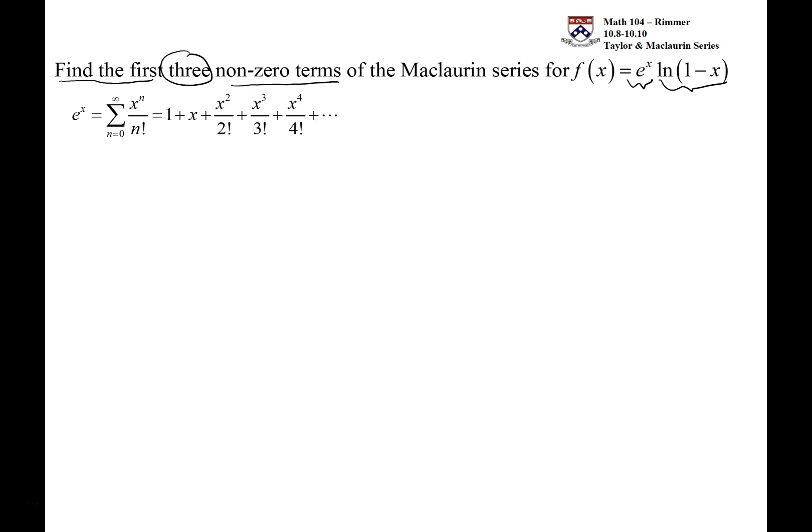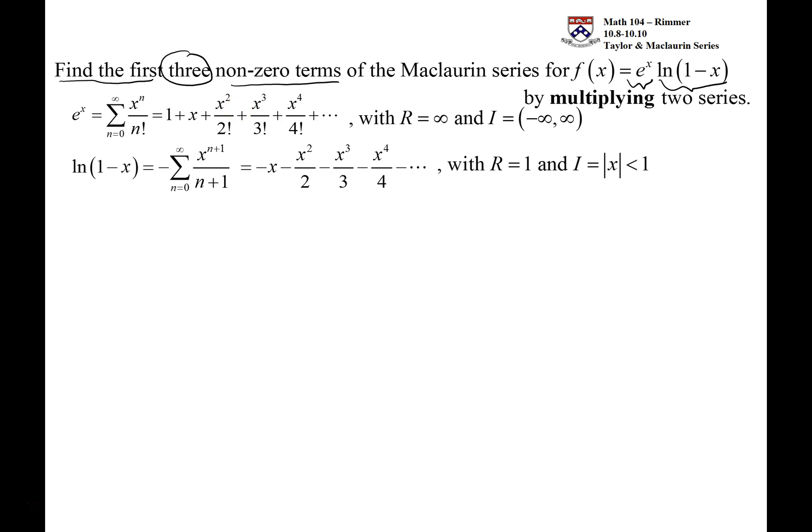So you go to the list and what you have is e to the x's power series. Converges for all real numbers. And then you have log of 1 minus x's power series. It converges between 1 and minus 1. And we're going to multiply these together.